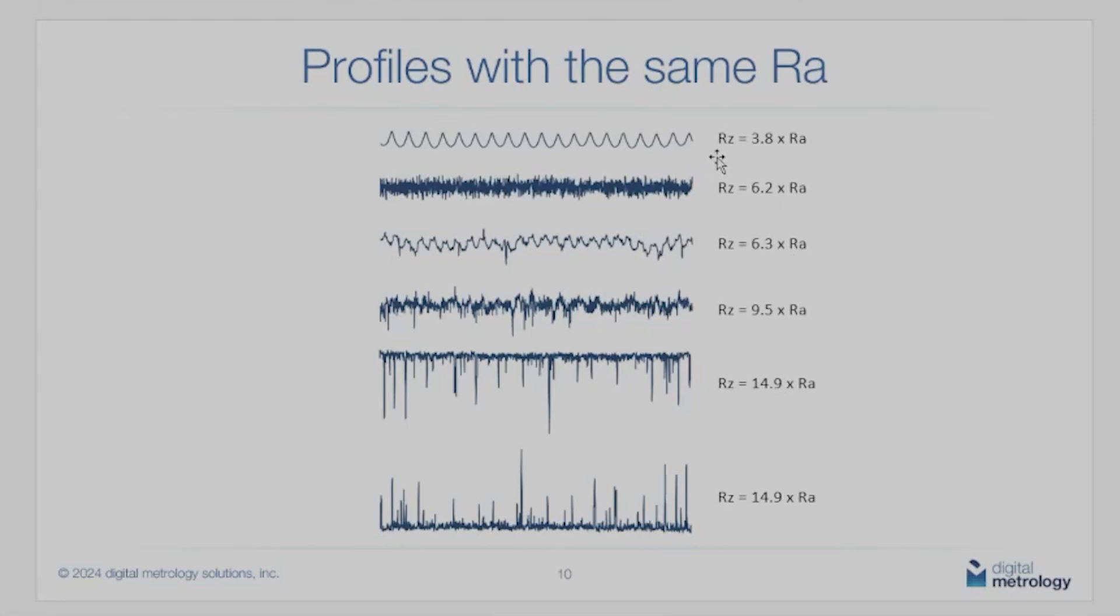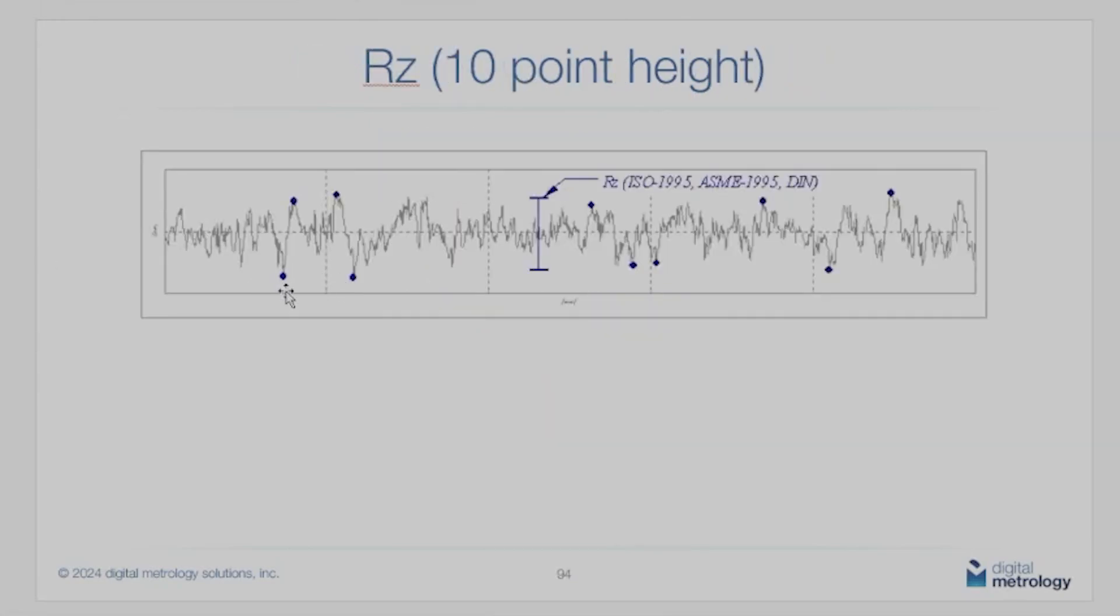Rz is adding value by using a totally different calculation. The calculation for Rz is like this: we're going to find one peak and one valley in each of those sampling lengths that you referred to. The highest peak and deepest valley in each sampling length gets averaged to become Rz.